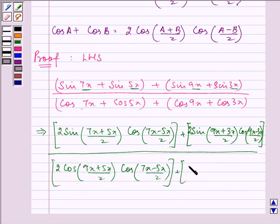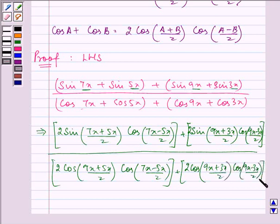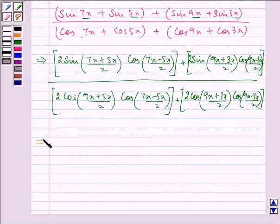And again, 2 cos, now our A and B have changed to 9x plus 3x by 2 and cos of 9x minus 3x by 2. Now, on solving, we have 2 sin 6x.